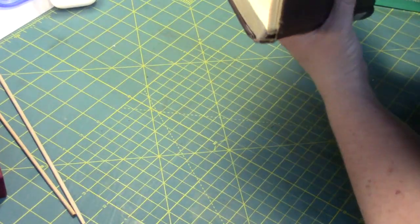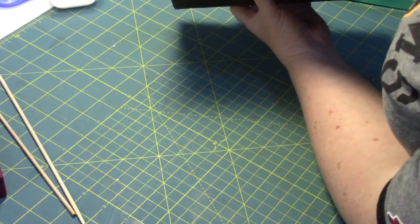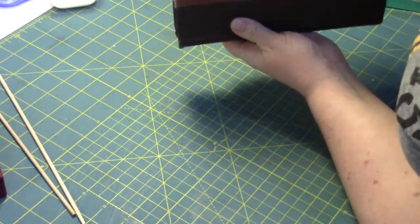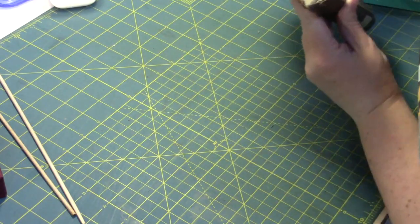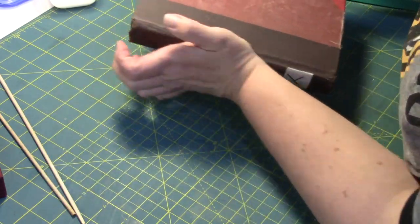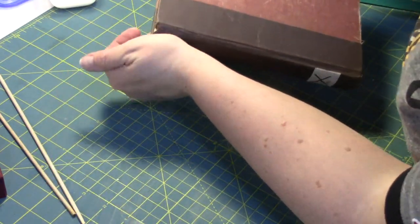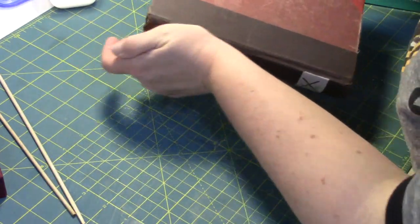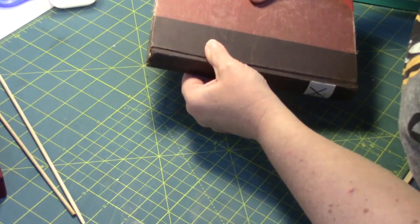So I'm going to just close it, make sure that my fore edge of my book is lined up the way I want it to be, kind of pressing on the spine there. I'm going to use the heel of my hand, and what I'm doing is just sort of pushing that adhesive up into the sections of the book.